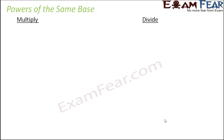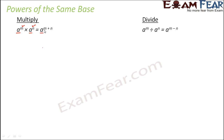So now let us first deal with the first category, that is powers of the same base. Let us look at both the multiplication and division scenario for two numbers with same base but different powers. So as per the rule, when you multiply two numbers such that they have the same base A but different powers, the product still has the same base but the powers get added. So that's what we see as per the law. Now we have to prove this — let us see whether this is true or not.